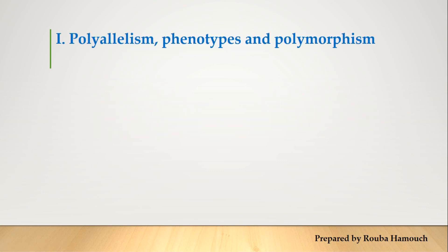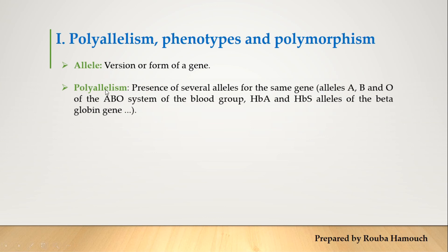What is the relation between polyallelism, alleles, phenotypes, and polymorphism? Here we have some definitions. First, an allele is a version or form of a gene — a copy of a gene. A gene is a DNA fragment characterized by a specific nucleotide sequence and occupies a particular place or locus on a chromosome. Polyallelism — poly from Greek means several or many — is the presence of several alleles for the same gene. For example, in the ABO blood group system, we have alleles A, B, and O.